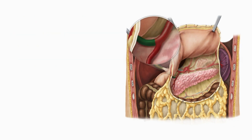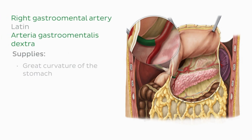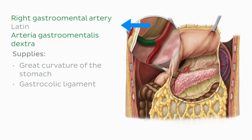The first branch of the gastroduodenal artery, highlighted here in green, is the right gastroemental artery. This artery supplies the greater curvature of the stomach and the gastrocolic ligament, running from right to left in the gastrocolic ligament and anastomosing with the left gastroemental artery of the splenic artery.